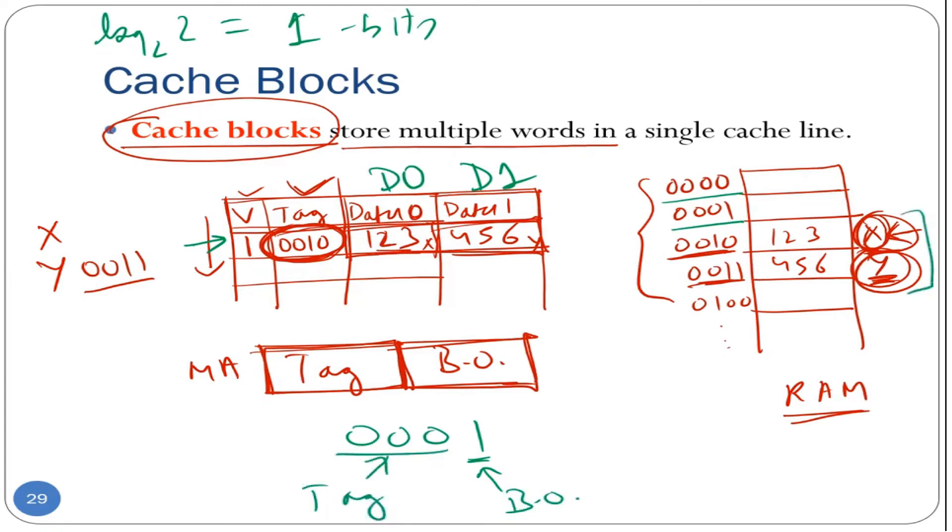When there is a hit for variable X, the address of variable X is basically 0010. We'll break down this address into a tag and the block offset field. So because the block has two words, log to base two of two, which is one bit, this would be reserved for the block offset and all the remaining higher order bits, this would be the tag field.